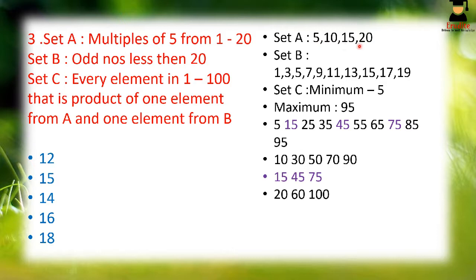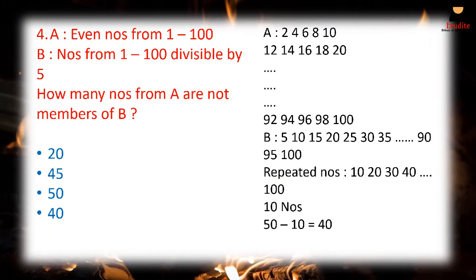However, 5 and 15 share a multiple relationship, so some products overlap. For example, 5 × 9 = 45 and 15 × 3 = 45; 5 × 15 = 75 and 15 × 5 = 75; 5 × 3 = 15 and 15 × 1 = 15. These three numbers — 15, 45, and 75 — are duplicates. Subtracting 3 from 21 gives 18 elements in Set C.